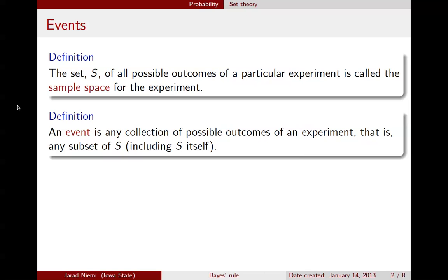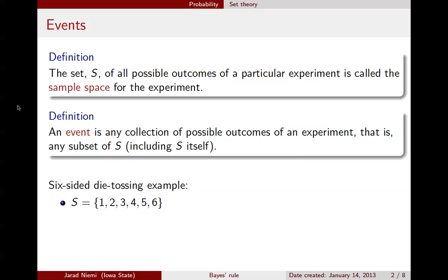As we will do throughout this mini lecture, we will give some definitions or theorems and then provide examples. The example we will be using throughout is the example of tossing a six-sided die. The six-sided die has numbers 1, 2, 3, 4, 5, and 6 for the six different sides. In this example, the sample space are those six integers, 1 up to 6.